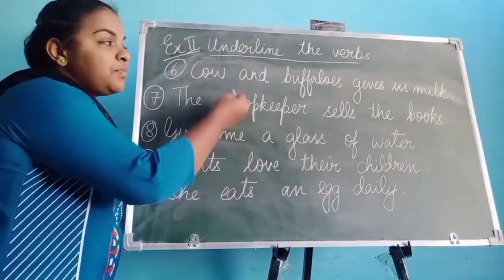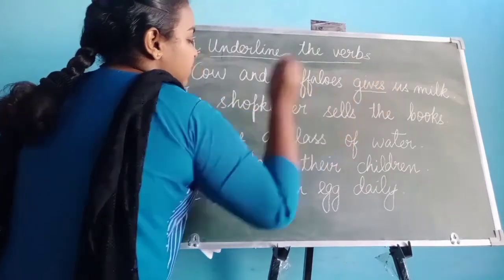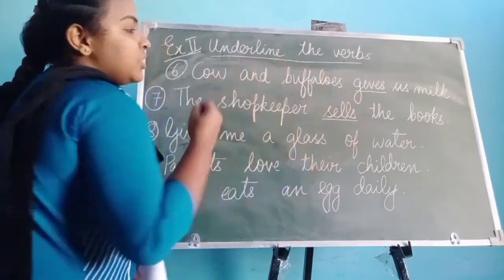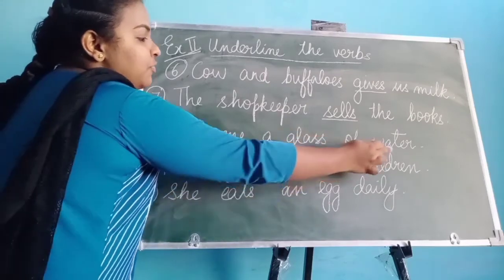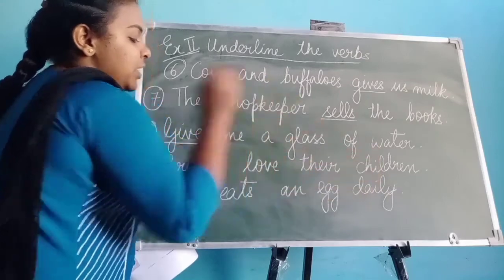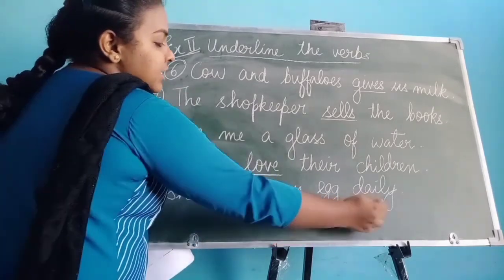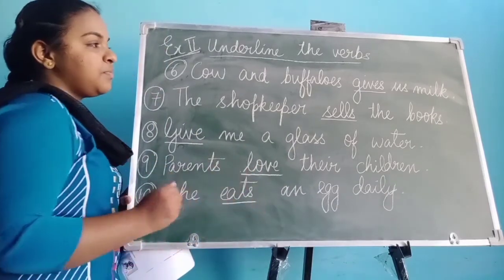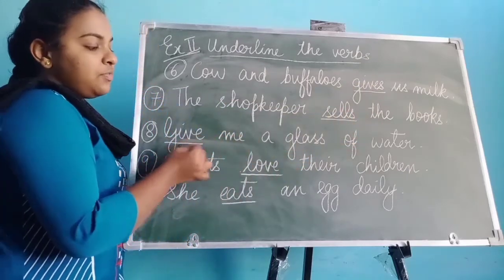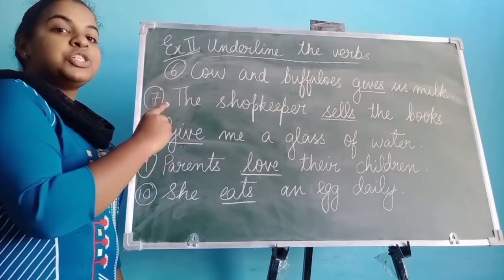Sixth question — cows and buffaloes gives us milk — what is the action word here? Gives. Next, the shopkeeper sells the books — the verb is 'sells'. Give me a glass of water — the verb is 'give'. Parents love their children — the action word is 'love'. She eats an egg daily — the verb is 'eats'. So the verbs are: gives, sells, give, love, eats. These are the answers from exercise two, question number six to ten.